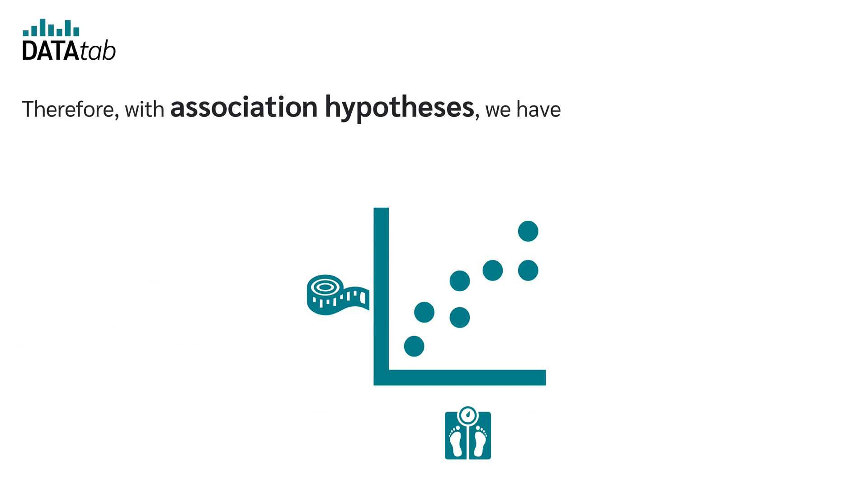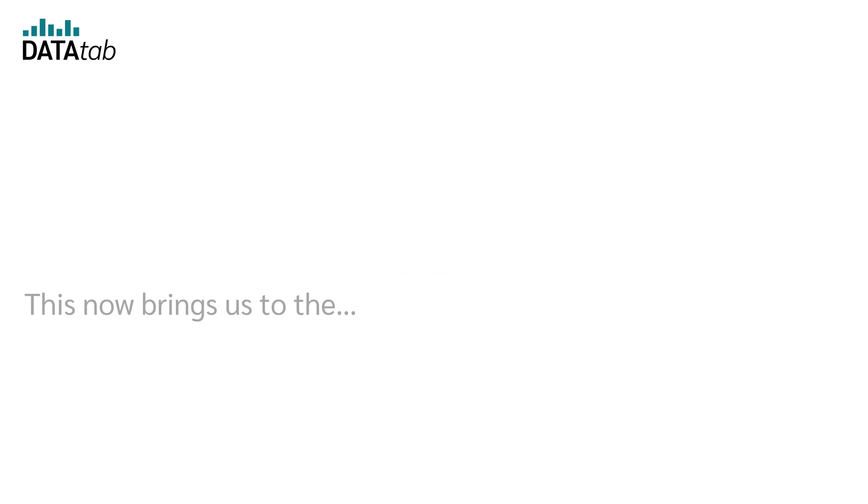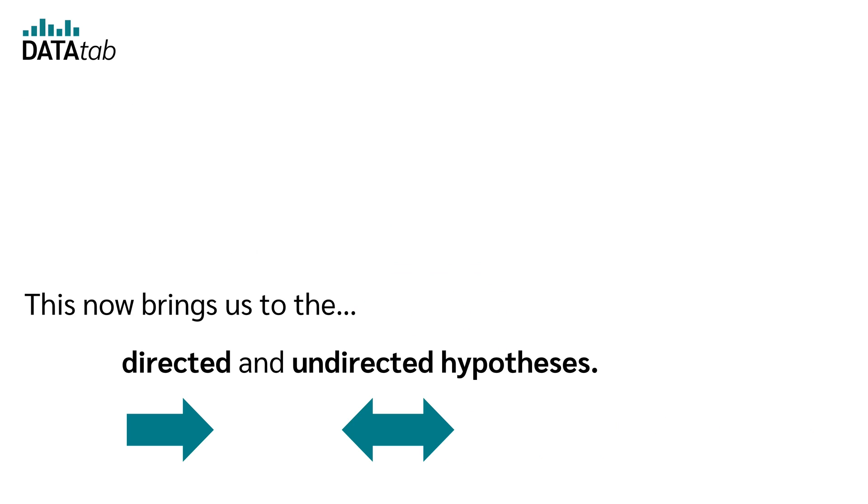Therefore, with association hypotheses, we have two ordinal or metric variables, and we test, for example, whether a high value of one variable is associated with a high value of the other variable. This now brings us to the directed and undirected hypotheses.